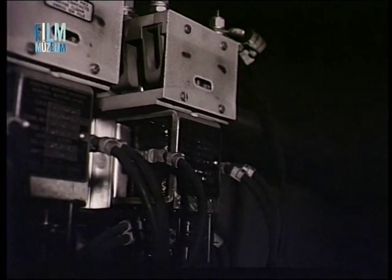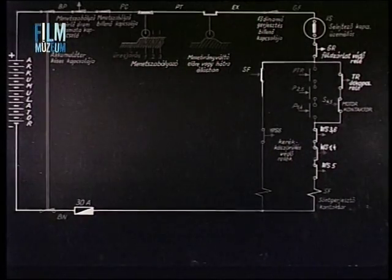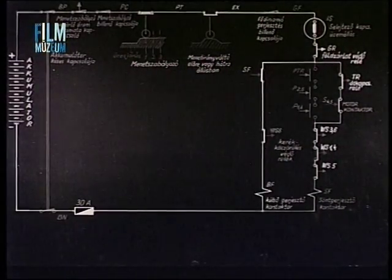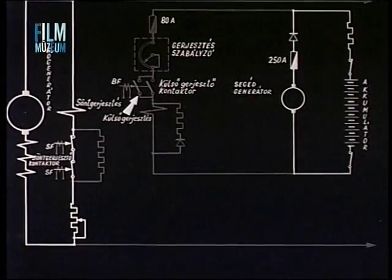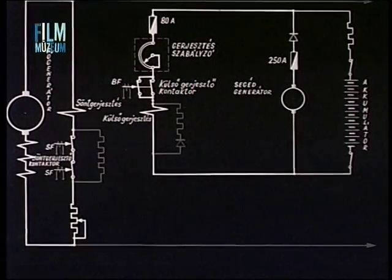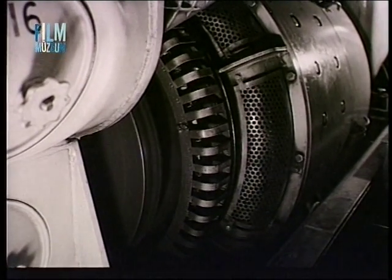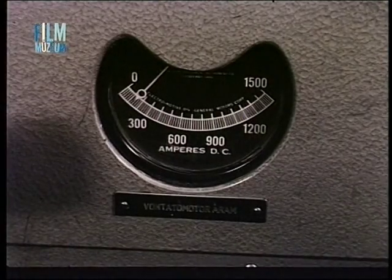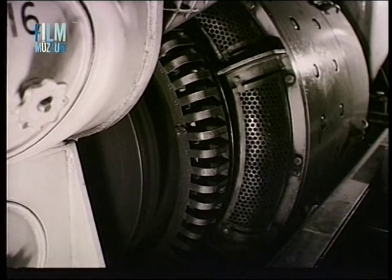When the SF excitation contactor engages, it closes the main generator's shunt excitation circuit. Another contact of the SF excitation contactor simultaneously operates the BF contactor. The BF contactor closes the main generator's external excitation circuit. The fully excited main generator now drives current through the traction motors, and the locomotive starts in idle or with very light load.